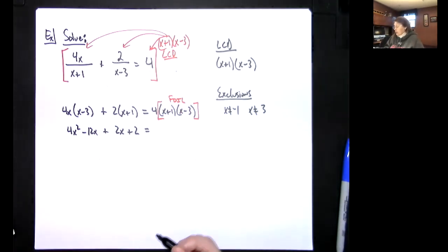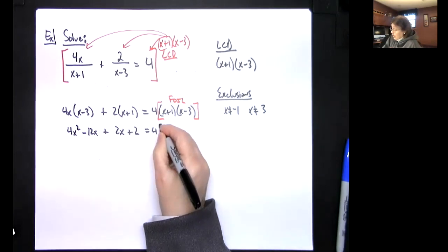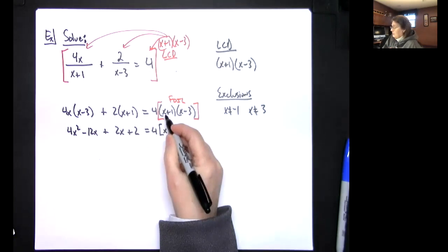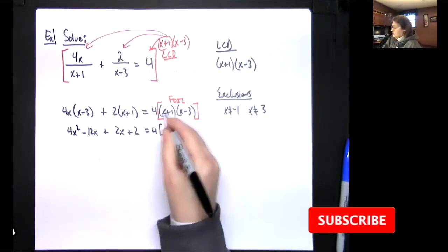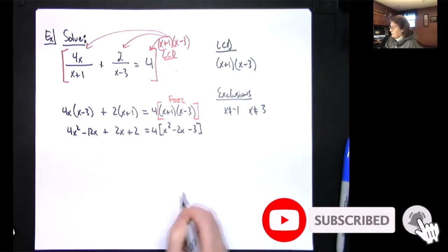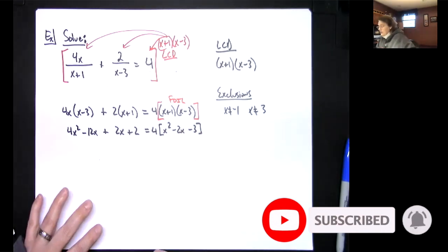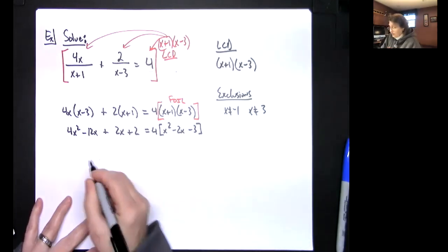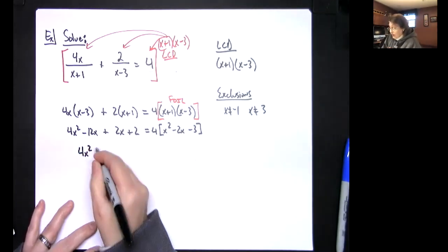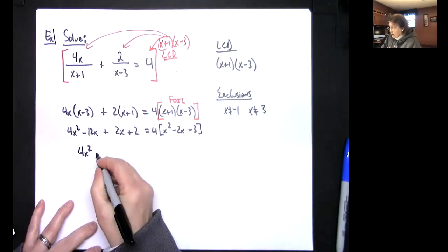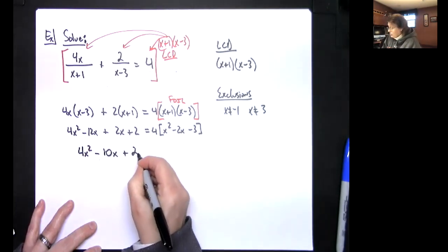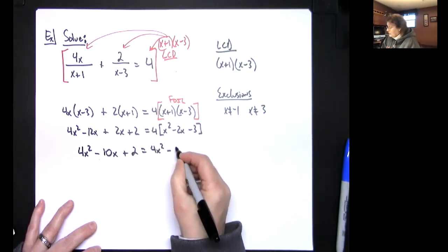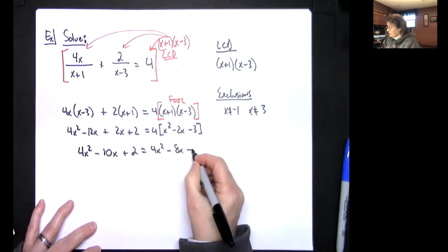My preference is to FOIL first and then distribute the 4 in later — I just like FOIL better. So I always FOIL first: x² and then negative 3 and x gives me negative 3x, then positive 2x, and then minus 3. That should give me negative 2x and negative 3. Then I distribute the 4 and simplify — putting those two terms together gives 4x² minus 10x plus 2.